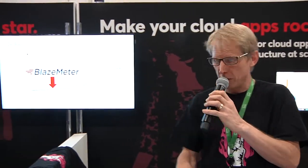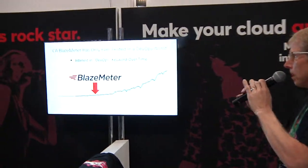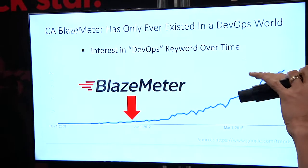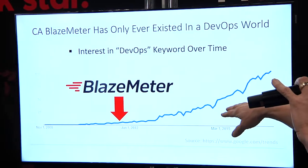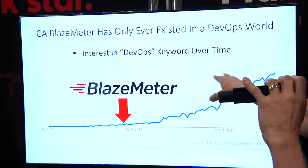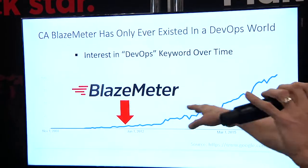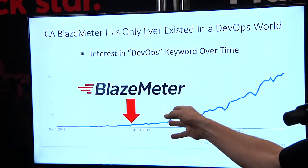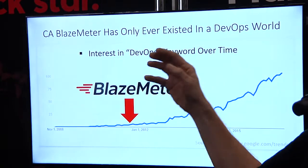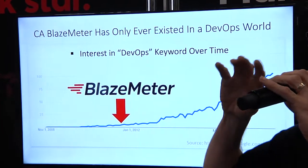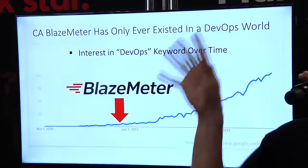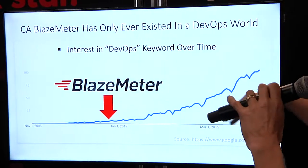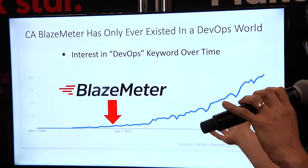The first thing I want to point out is that BlazeMeter was born along with DevOps. If you look at this — this is the DevOps keyword on Google, interest in DevOps — we were born just as it was starting to take off. So we're not a solution that puts DevOps in their marketing or in their latest campaign. We're actually built to solve a DevOps problem.